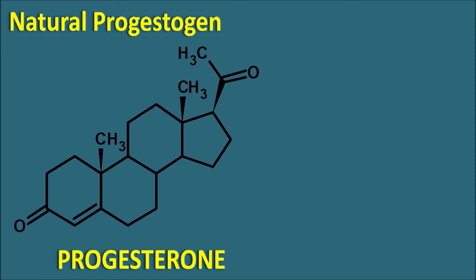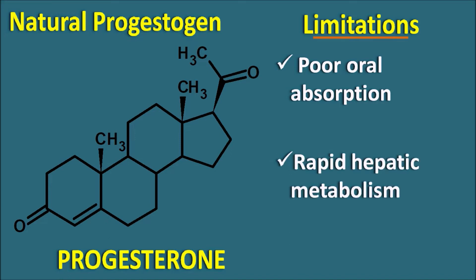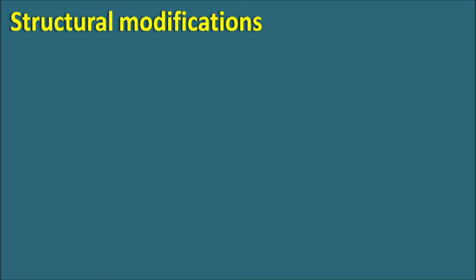Although progesterone is a natural progestogen, it cannot be used as a drug because it has a few limitations. Progesterone has poor oral absorption, so it cannot be given by the oral route. When given by other routes, it shows rapid hepatic metabolism, resulting in a short duration of action. That's why progesterone must be modified to produce semi-synthetic derivatives.